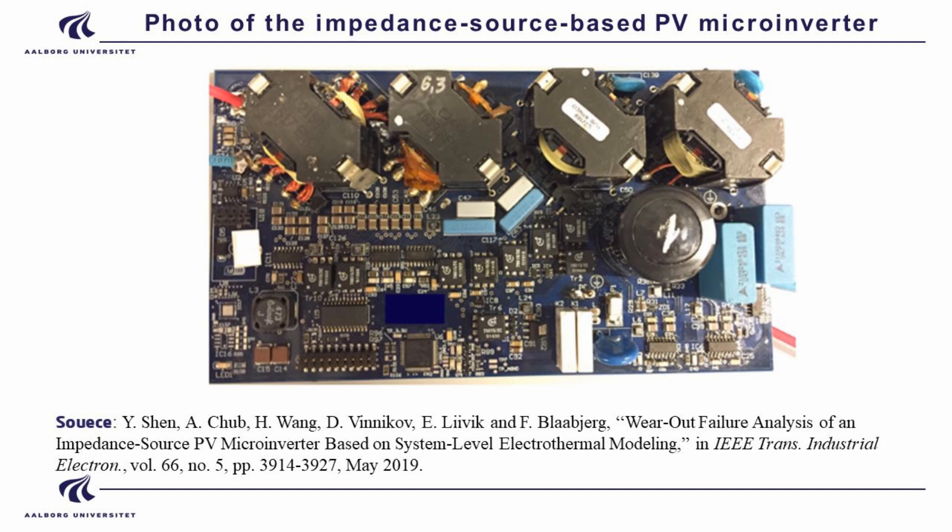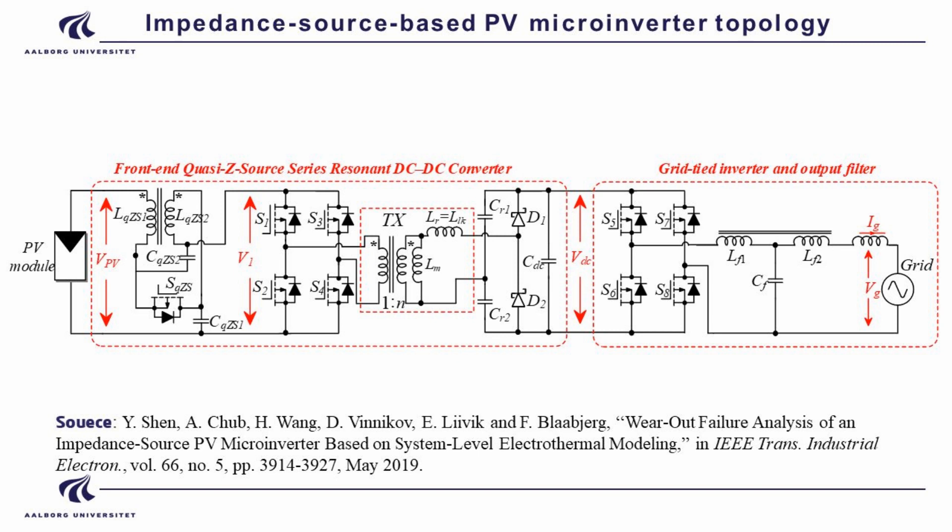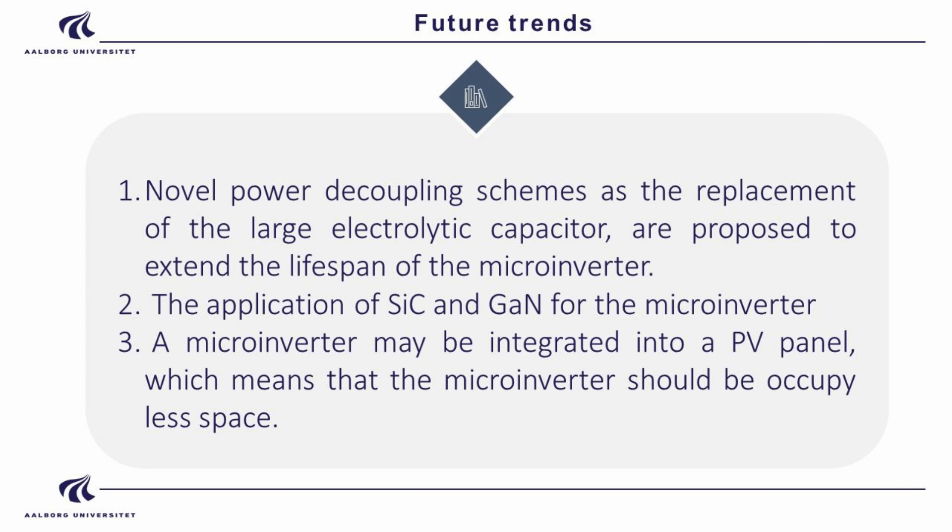The last topology is for a Quasi-Z source microinverter. It includes a Quasi-Z source network, a full-bridge inverter, a hybrid transformer with resonant inductors, a voltage rectifier, and a grid-tied inverter. For the filter stage, a normal power decoupling scheme can be applied.